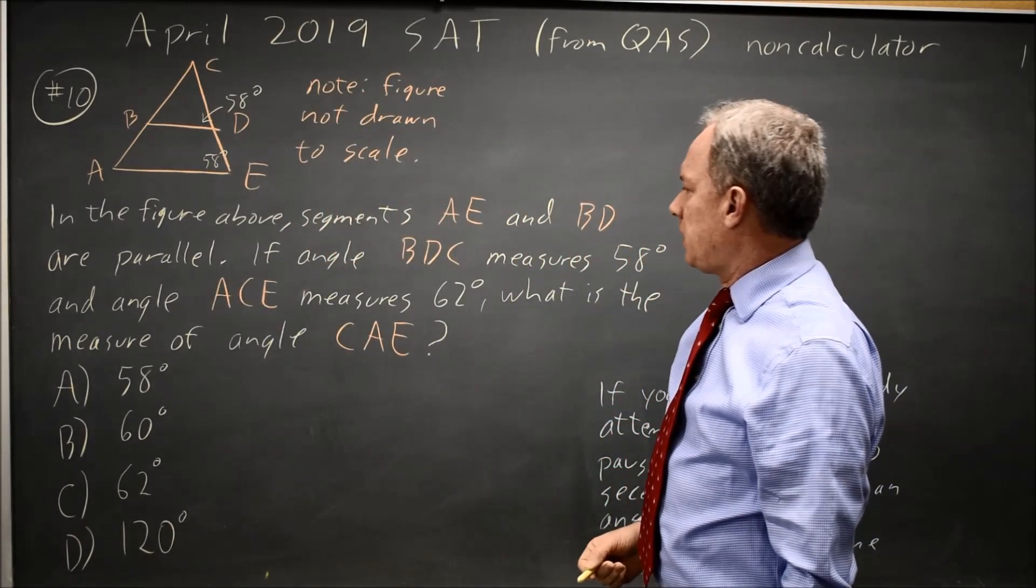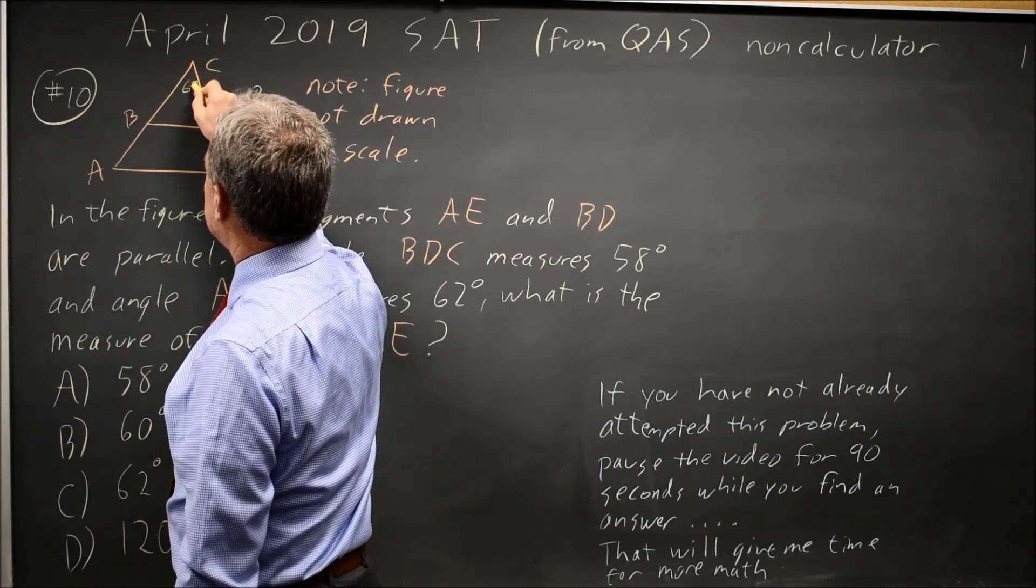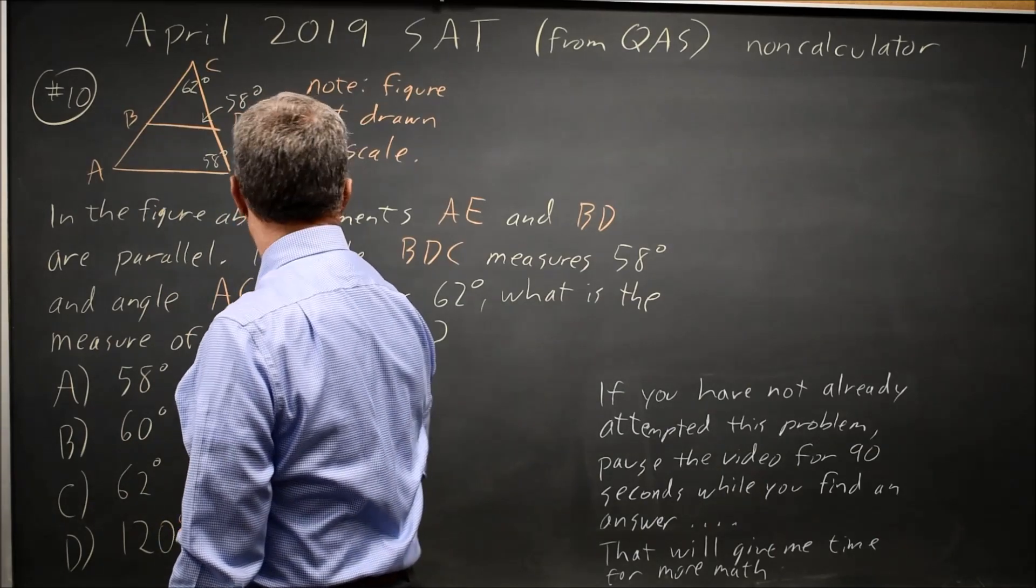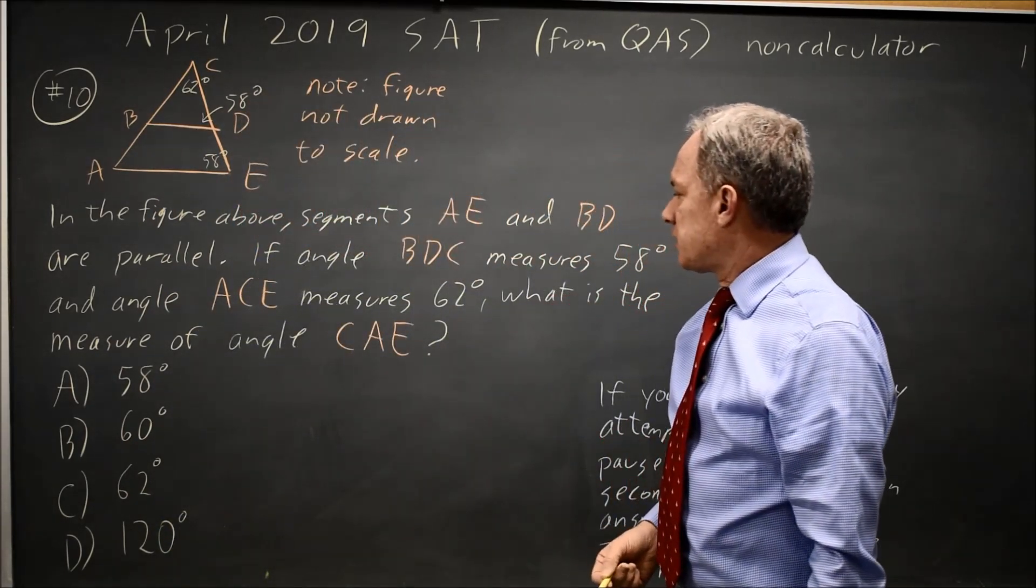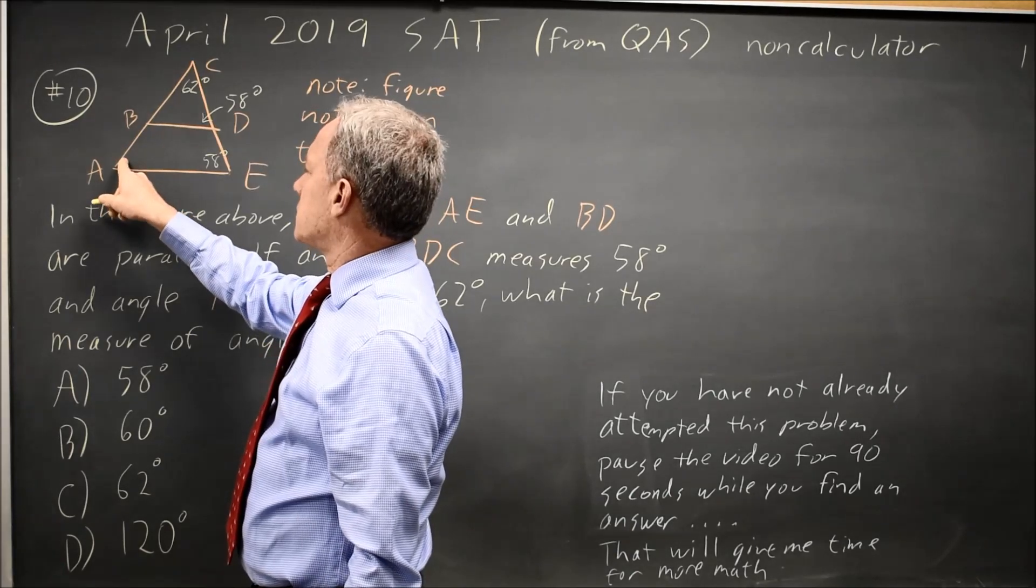Angle ACE measures 62 degrees. A, C, E, this is 62 degrees. And they're asking for the measure of angle CAE. That's this angle here.